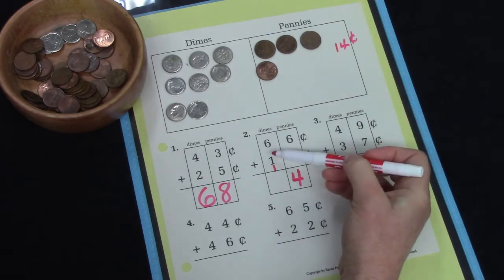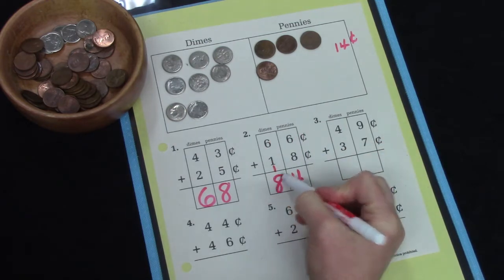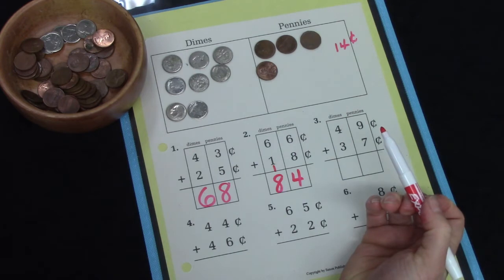And now I have 6 plus 1 plus 1 more. 6, 7, 8.